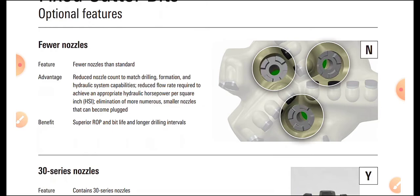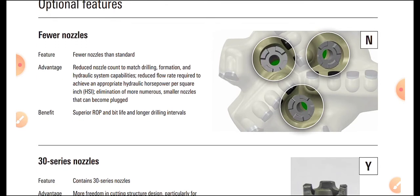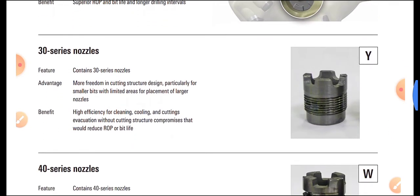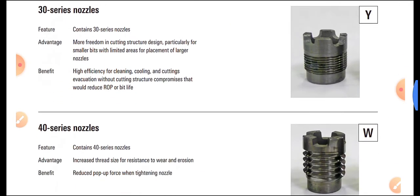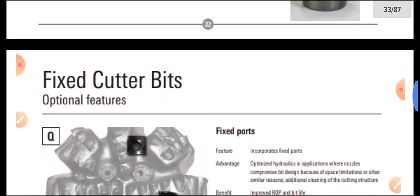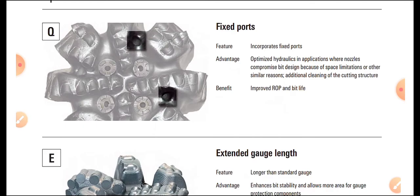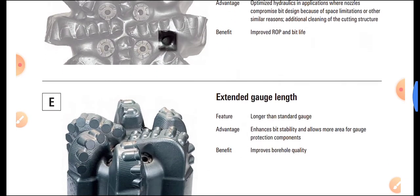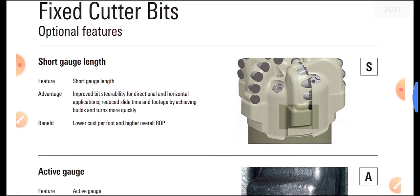These are nozzles. The purpose of a nozzle is to inject drilling fluid, which is sent via the mud pump through the drill string to the bottom of the hole through three holes called nozzles. The pressure coming through is converted into velocity by these nozzles. There are different nozzle series — 30 series, 50 series — and also fixed ports and extended gauge length configurations.